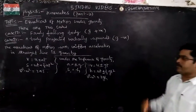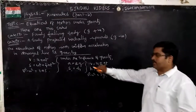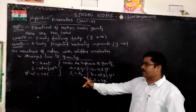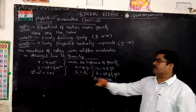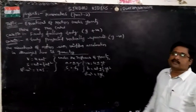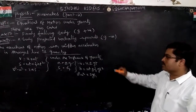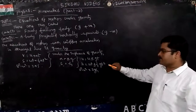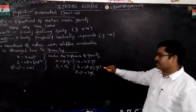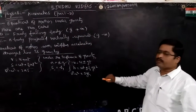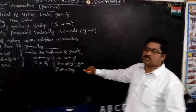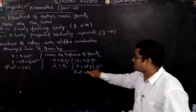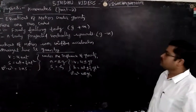Now for motion under gravity, A can be written as ±G and S can be written as ±H. Then both equations become: V = U ± Gt, H = Ut ± ½Gt², and V² - U² = ±2GH.